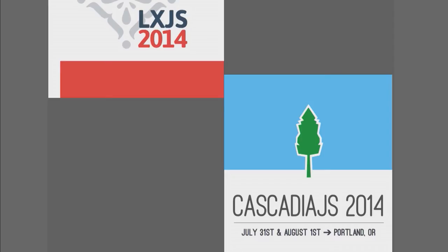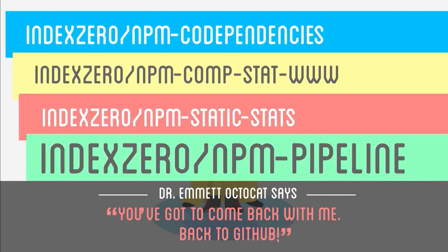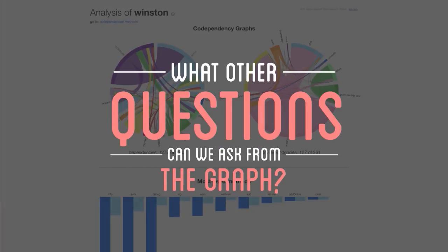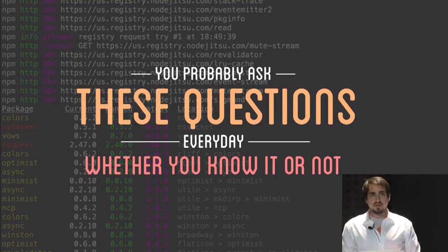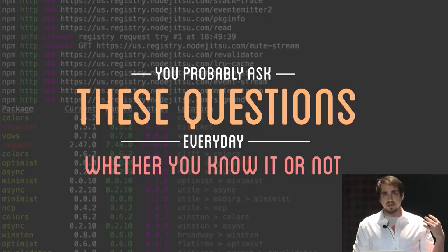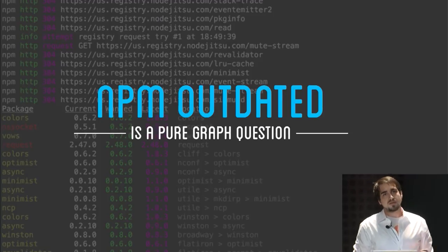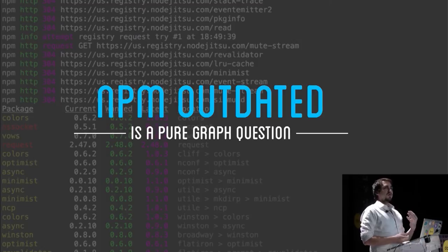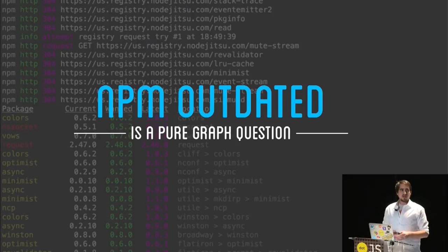The technical details of this were talks I gave earlier this year, which have videos online, along with some code you can find online as well. The purpose of this talk is to ask: what other questions can we ask from our graph? You probably ask these questions every day but don't know it. Behind me is an example of one of those questions, which is NPM outdated. NPM outdated will tell me, in the context of the global graph right now on the latest versions, based on the semantic things I have in my package.json dependencies, am I out of date and why?